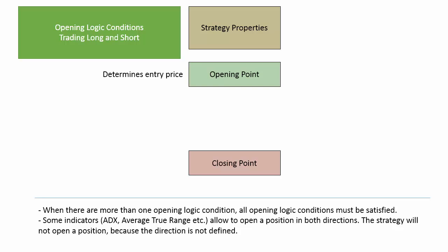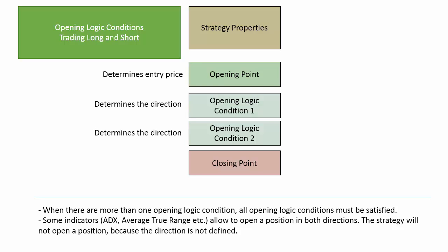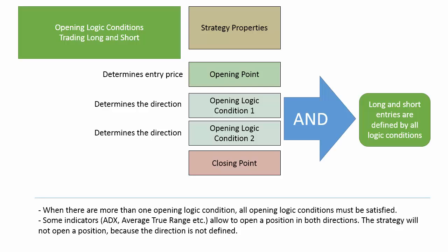Imagine we have two or more indicators that specify the direction of the position which the strategy is about to open. When there are more than one opening conditions, all of them must be satisfied. However, some indicators like ADX and Average True Range allow opening a position in both directions. If we use only indicators like those two, the strategy will not open a position since none of the indicators define a distinct direction.